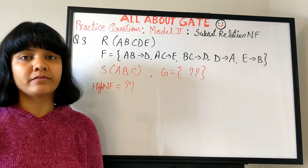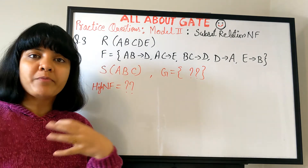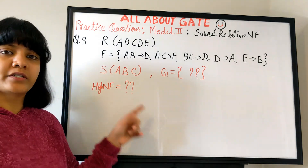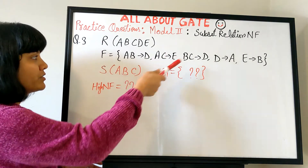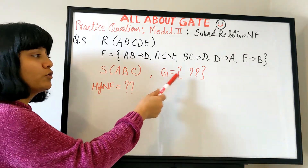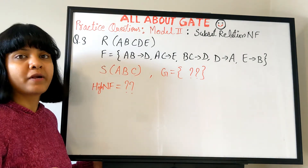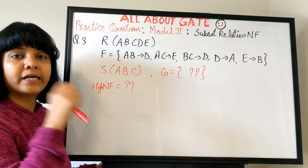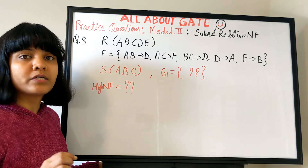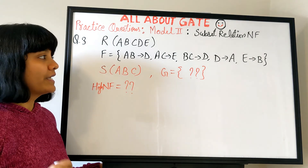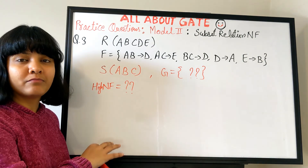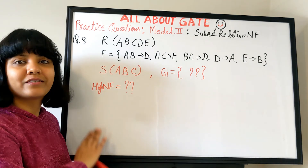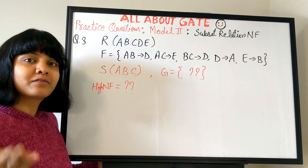I hope this type of question is now clear — how to implement what we've learned to find FDs that are given versus not given. I'm dropping one more question on the board, question 3, for practice: bigger relation R with an FD set, smaller relation S with no FD set — find the highest normal form. Please solve it and put the answer in the comments. In the next video we will start about decomposition and the properties of decomposition. Please share this video because this model of questions is rarely explained elsewhere and does appear in the GATE exam. Bye-bye.